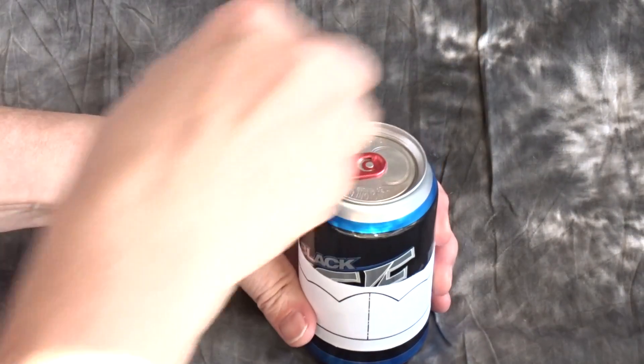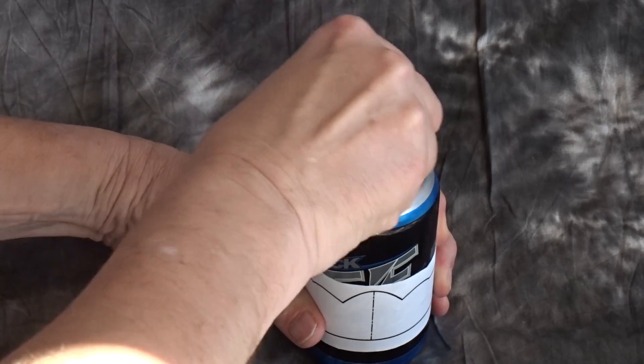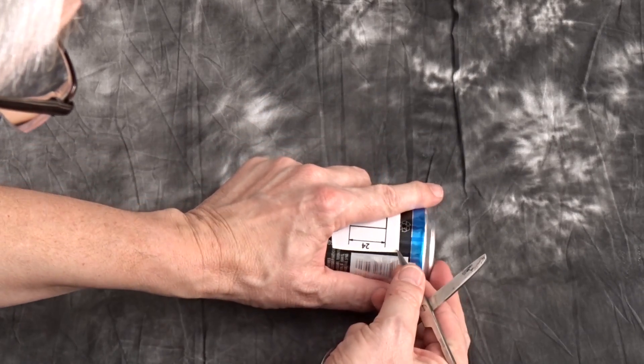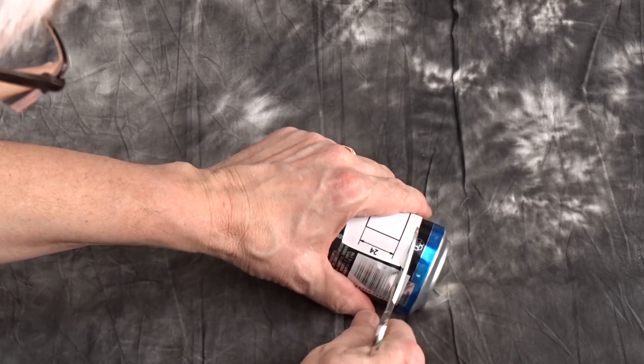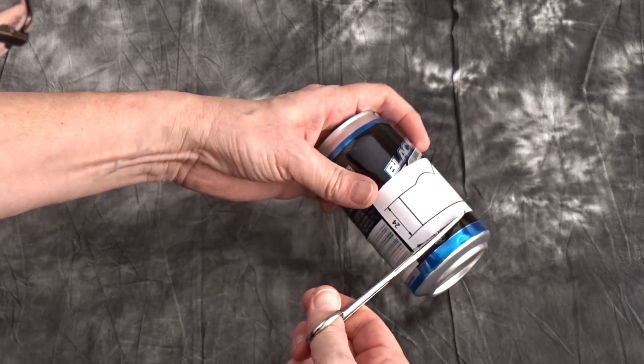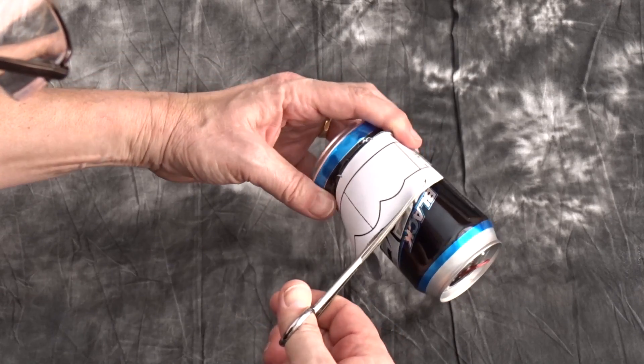Next we have to empty the beer can, that's the good part. With the sharp point of the scissors, we can cut the pattern off of the beer can. Be careful so you don't cut yourself on the sharp edges.